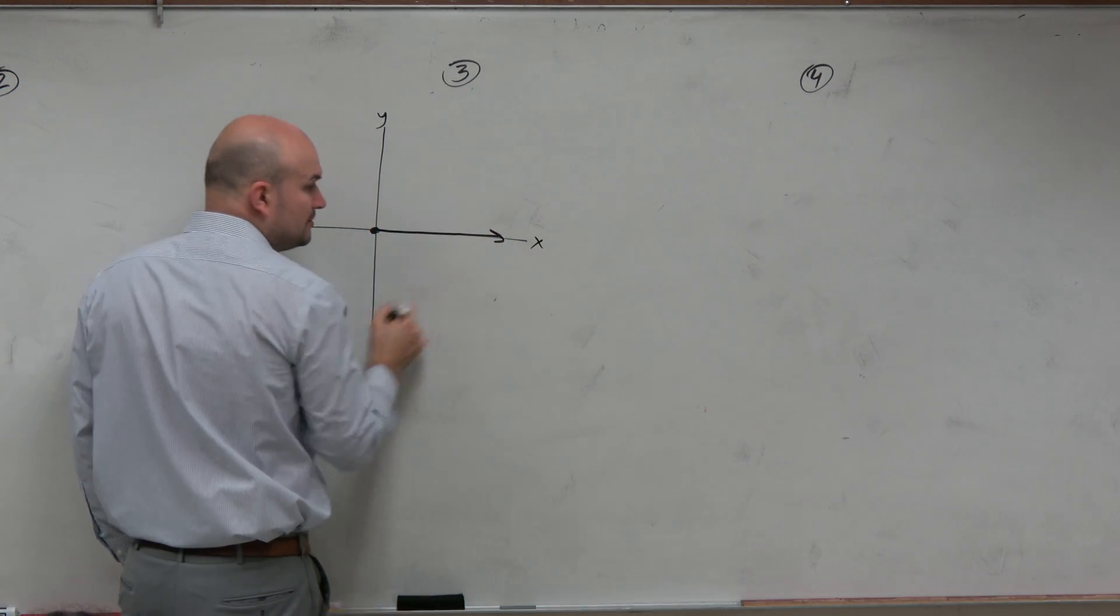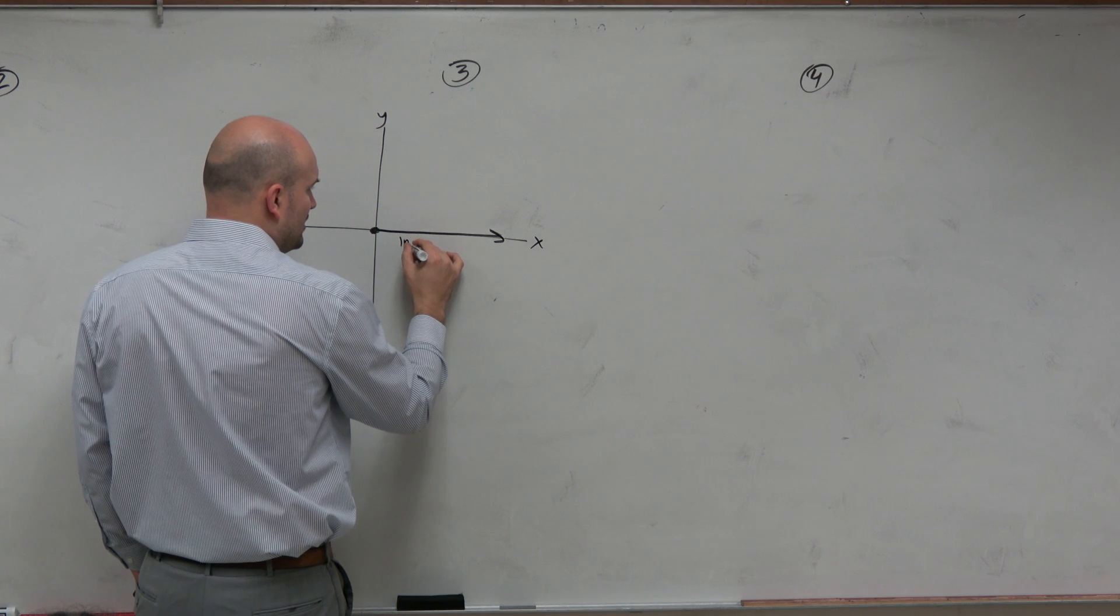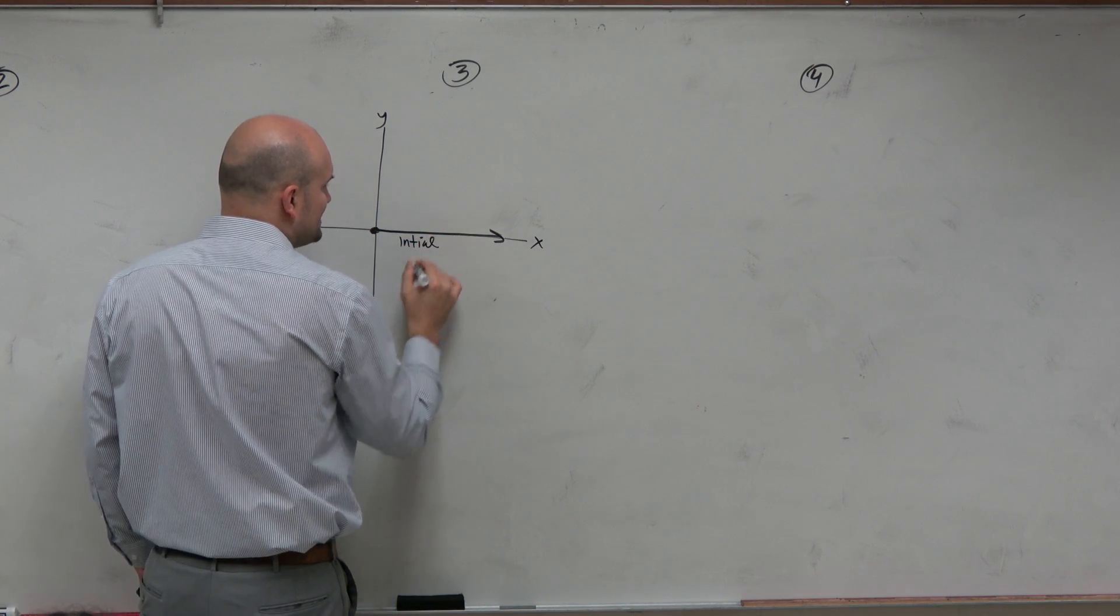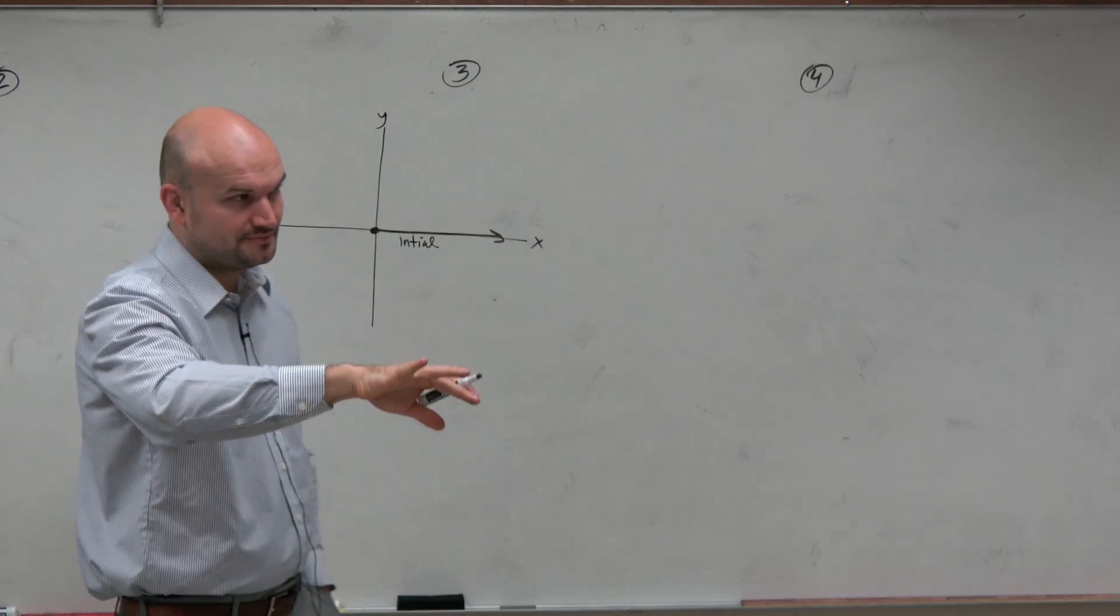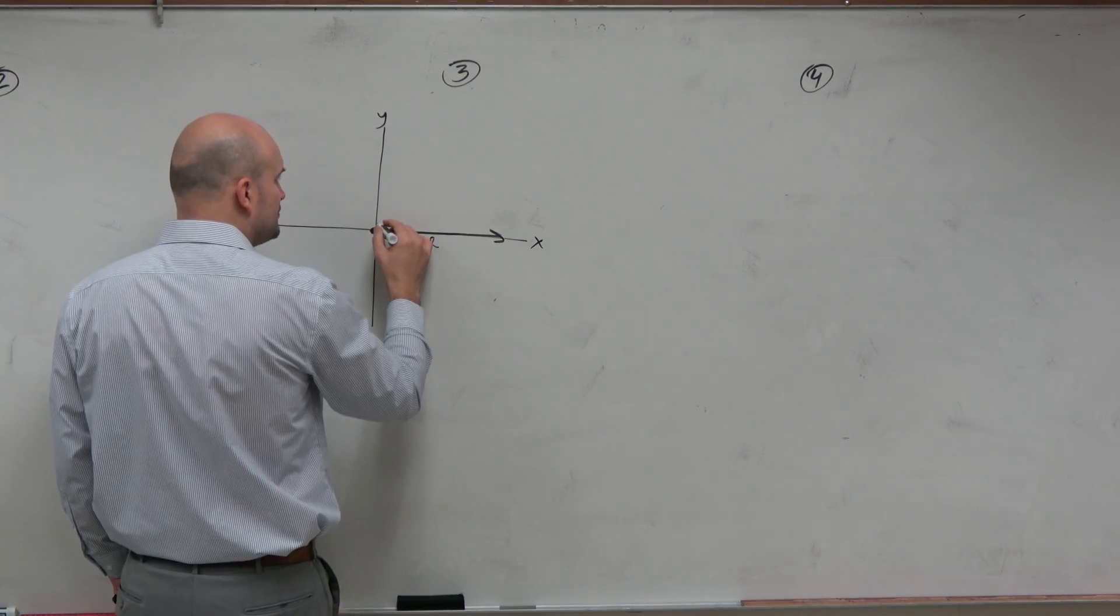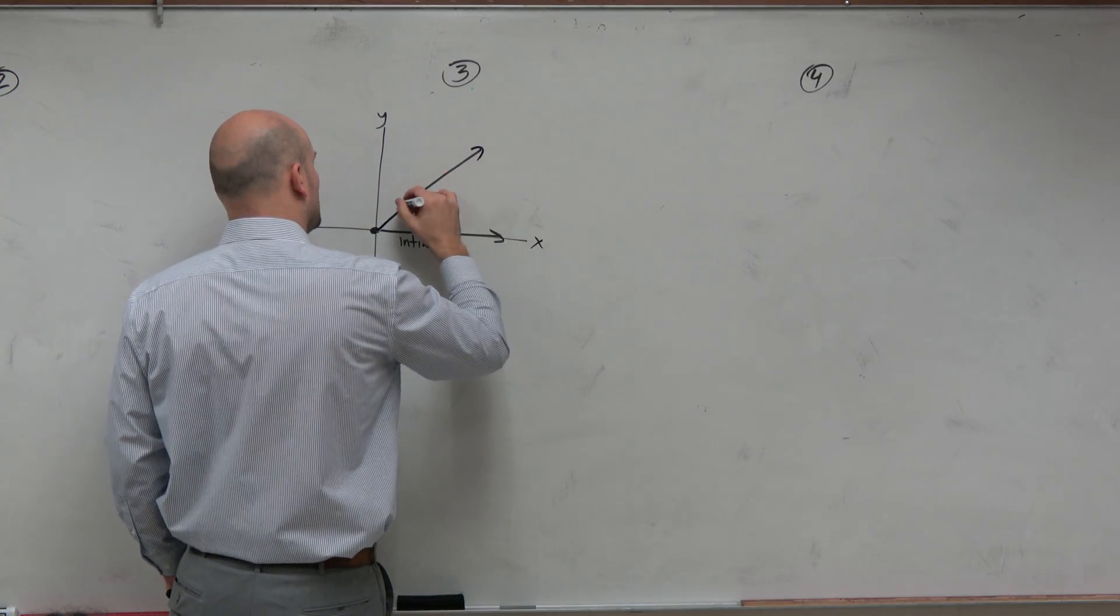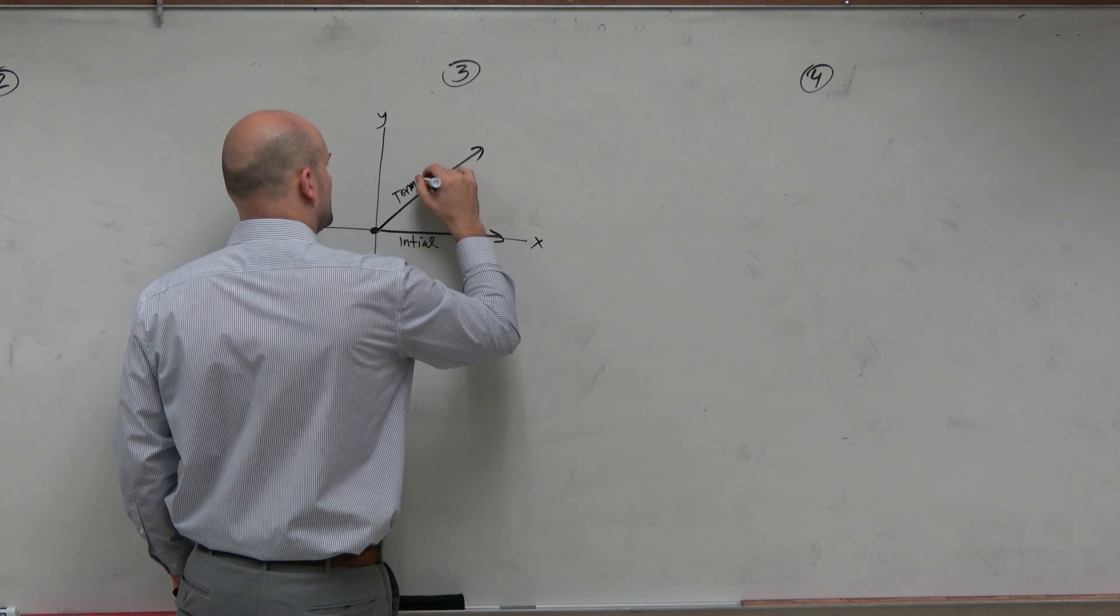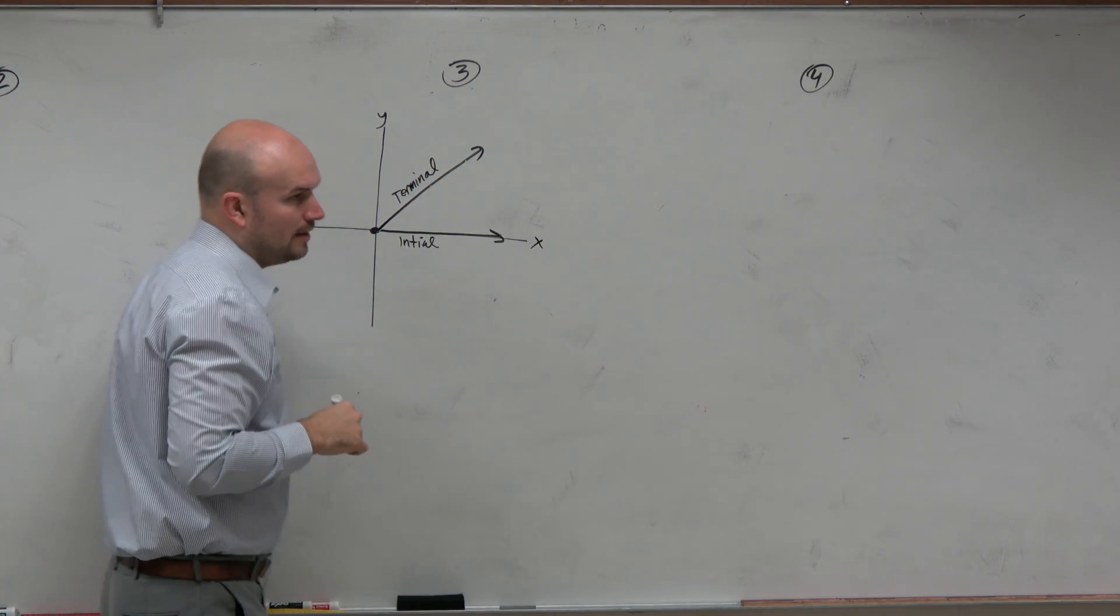There is an initial side, which we call it, it's kind of like the start, which is on the positive side of the x-axis. Then there is a rotation between two rays, which goes to what we call your terminal side.